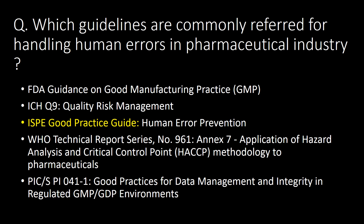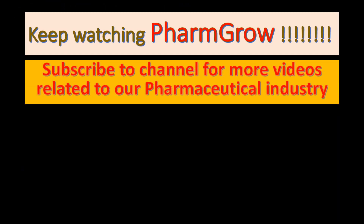Which guidelines are commonly referred to for handling human errors in the pharmaceutical industry? The following five guidelines are commonly referenced: first, FDA Guidance on Good Manufacturing Practices; second, ICH Q9; third, ISPE Good Practice Guide; fourth, WHO Technical Report Series Number 961, Annex 7; and fifth, PIC/S Guidelines. Keep watching and subscribe to the channel for more videos related to the pharmaceutical industry.